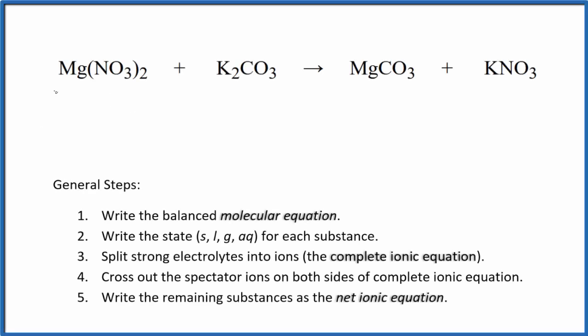To write the net ionic equation for magnesium nitrate plus potassium carbonate, we first need to balance the molecular equation, and we can do that by putting a coefficient of 2 in front of the potassium nitrate. So that balances the molecular equation, and then we can write the state for each substance.